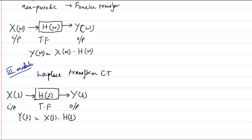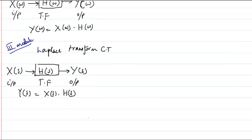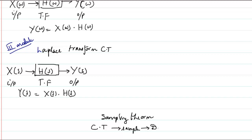The Laplace transform essentially takes the signal to the s-domain. In the second half of the third module, we covered the sampling theorem, wherein we sample the continuous time signal to get the discrete time signal. So we slowly moved from continuous time signals to discrete time signals — that is module 3.